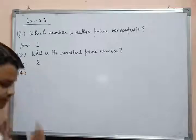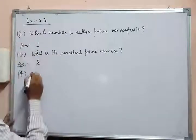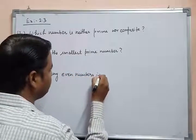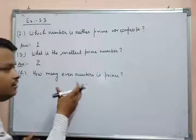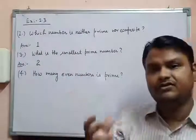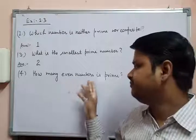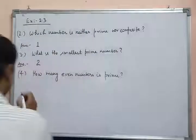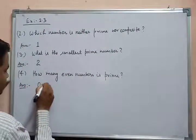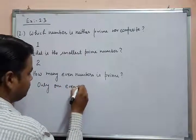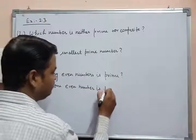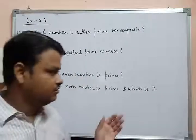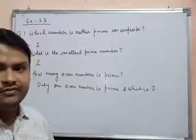Question number four is also answered in today's notes. How many even numbers are prime? The answer is only one even number is prime, and that is two. Only one even number is prime, which is two.